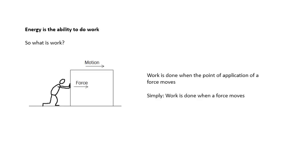Energy is the ability to do work. Lots of different types of energy. What is energy? Energy is the ability to do work. So what is work? In physics, work has a very definite meaning which you need to know. Work is done when the point of application of a force moves. This person here is pushing this box, and the box is moving. That person is doing work. Simply, work is done when a force moves.